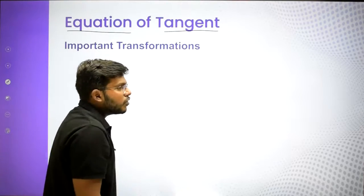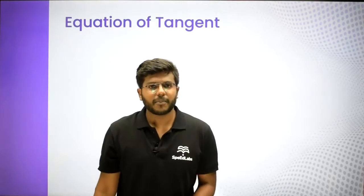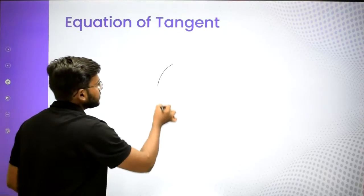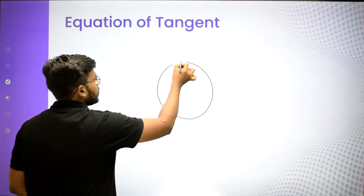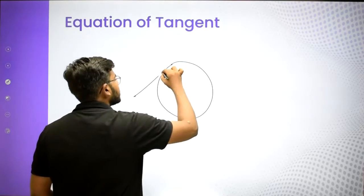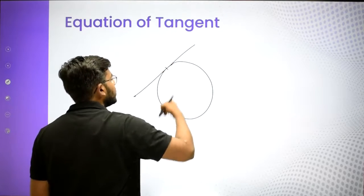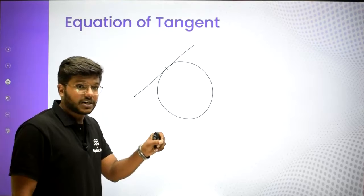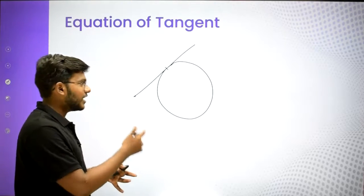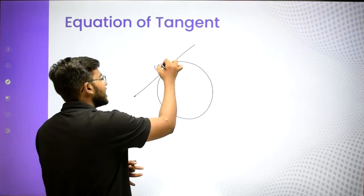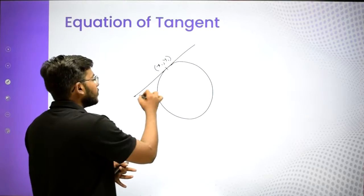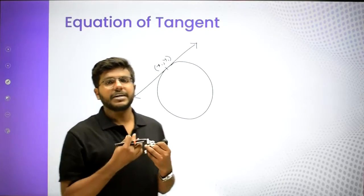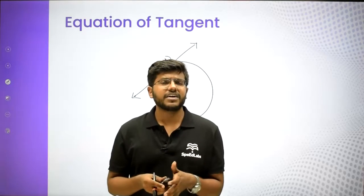You know what a tangent is, right? A tangent is basically a line which touches your circle at a single point. It touches - it does not intersect. So it touches at only one point. So if we want to find the equation of tangent, there are different methods, different ways to get the equation of a tangent.